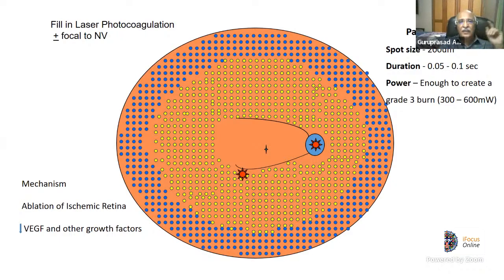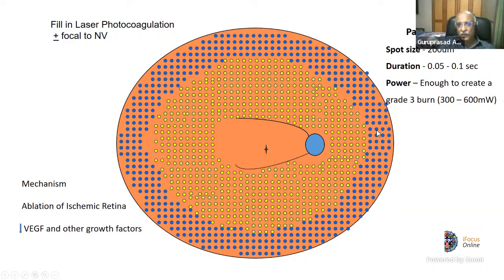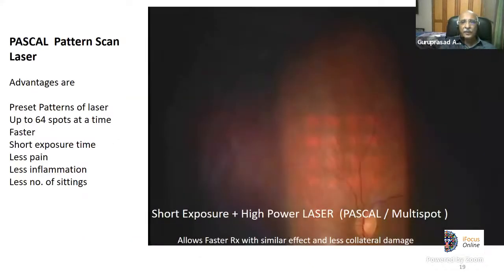If neovascularization persists in the periphery, the LIO is used to fill in or tighten the laser. The mechanism of action of PRP is ablation of the ischemic retina — a destructive procedure that reduces VEGF production and other growth factors responsible for driving and maintaining neovascularization, which is the source of fibrovascular proliferation causing TRD and vitreous hemorrhage.